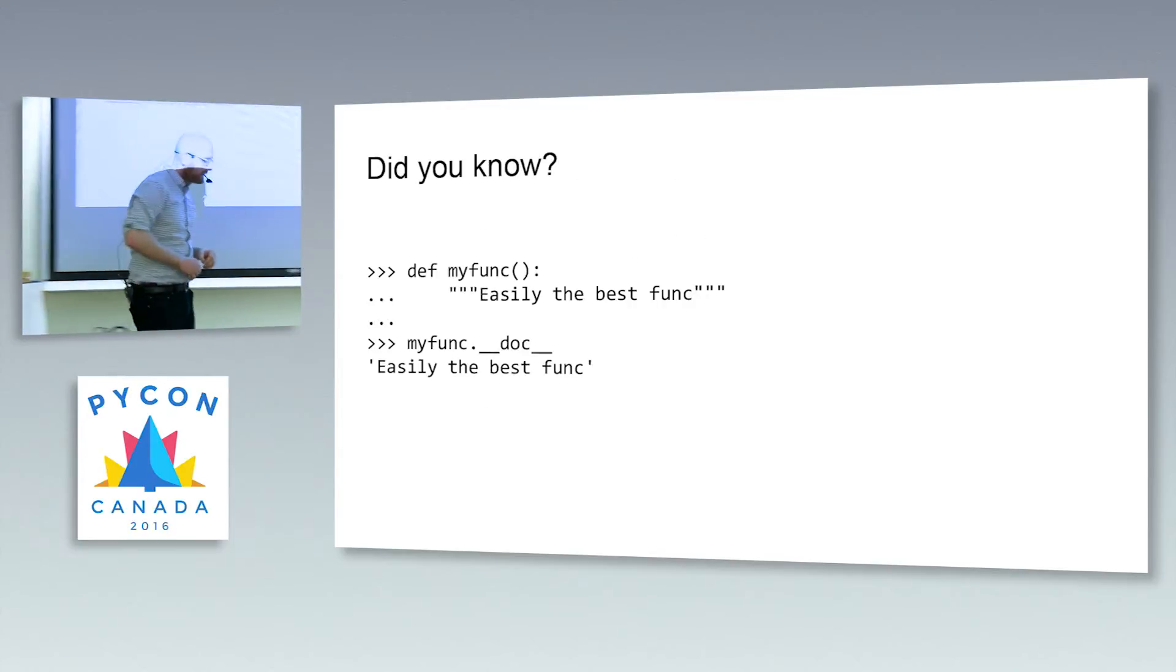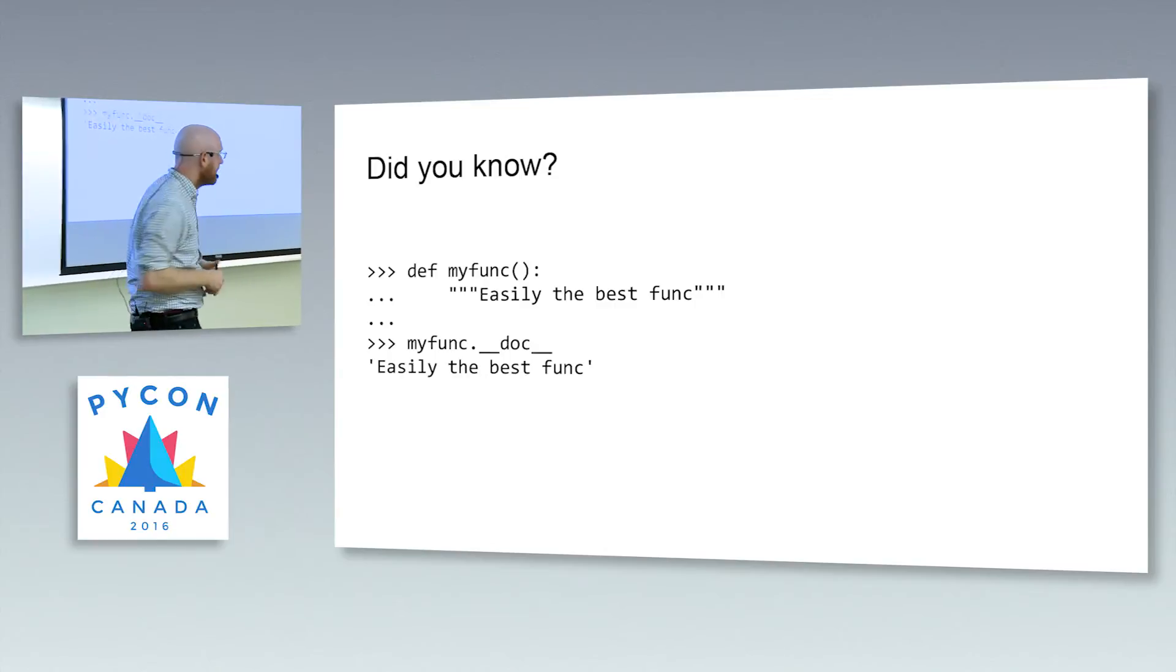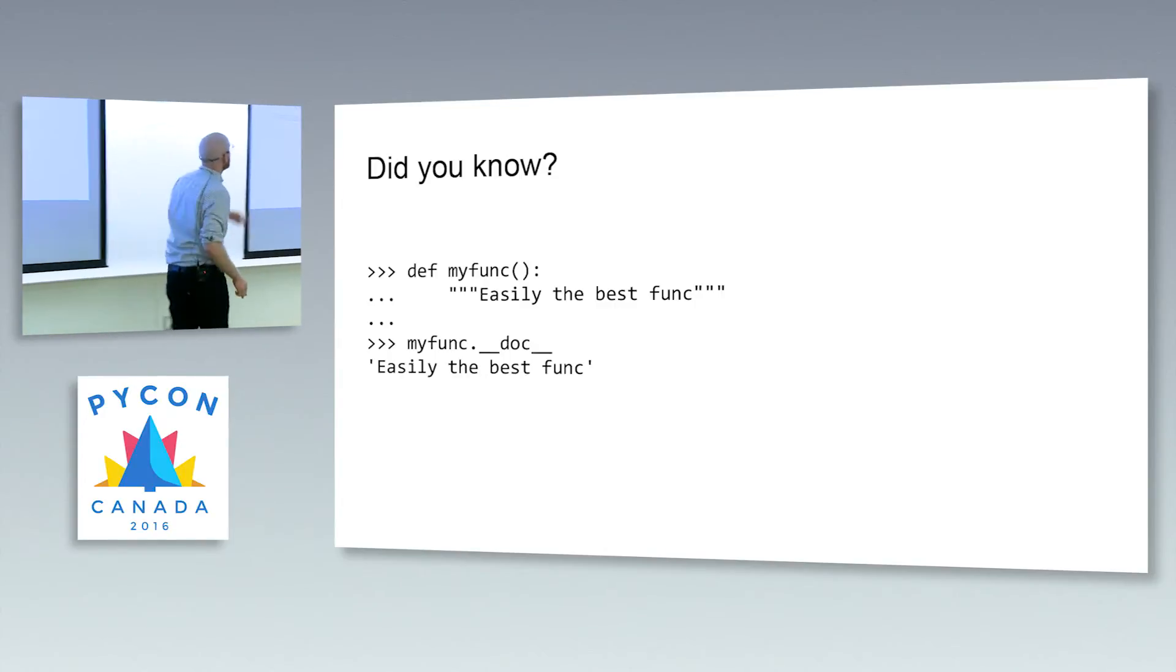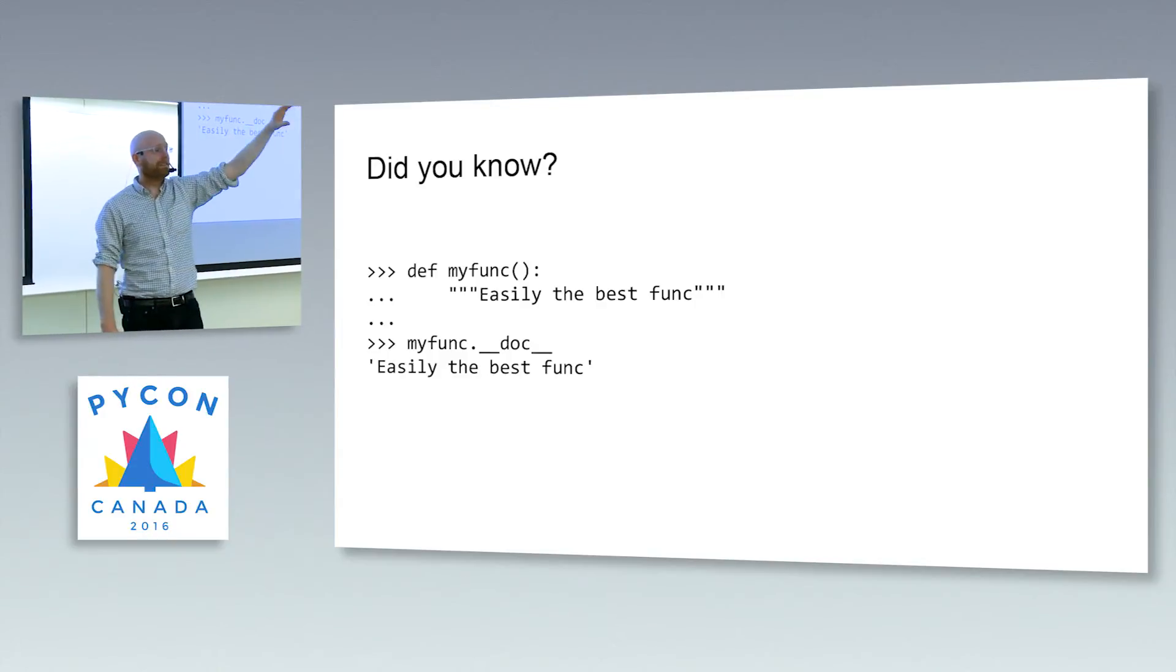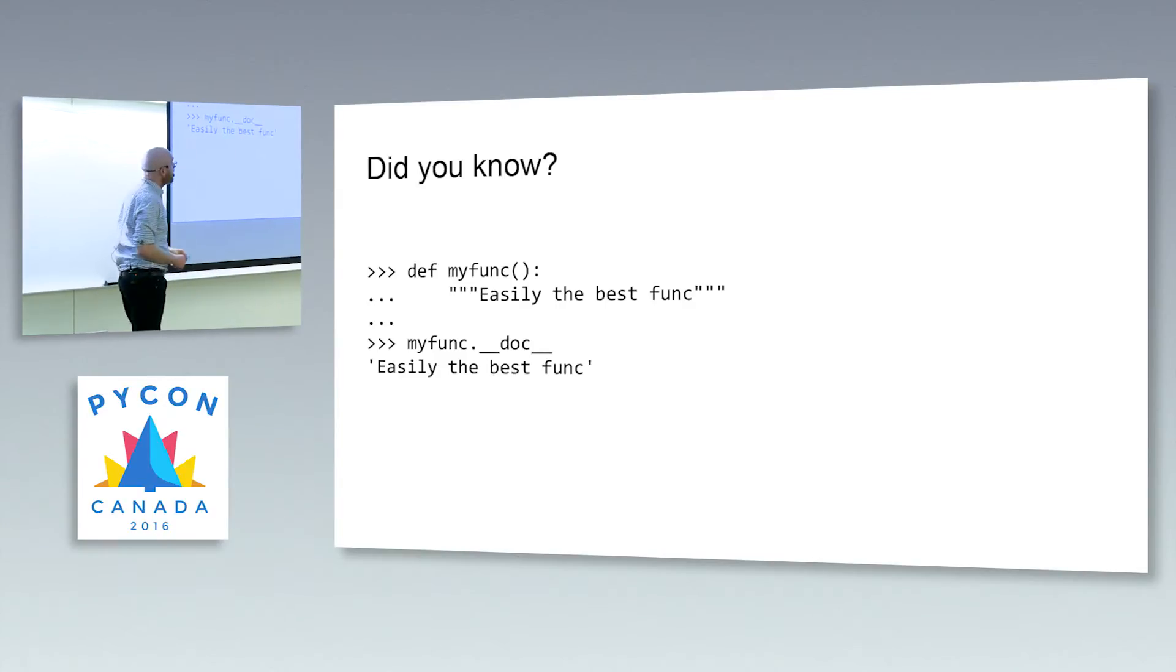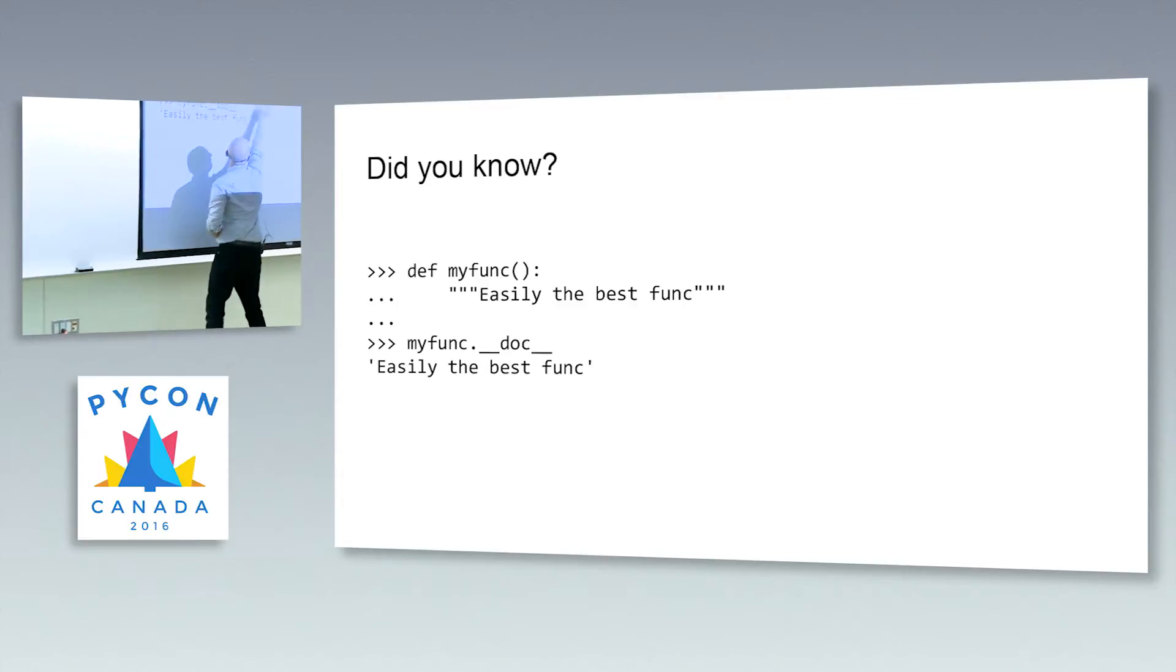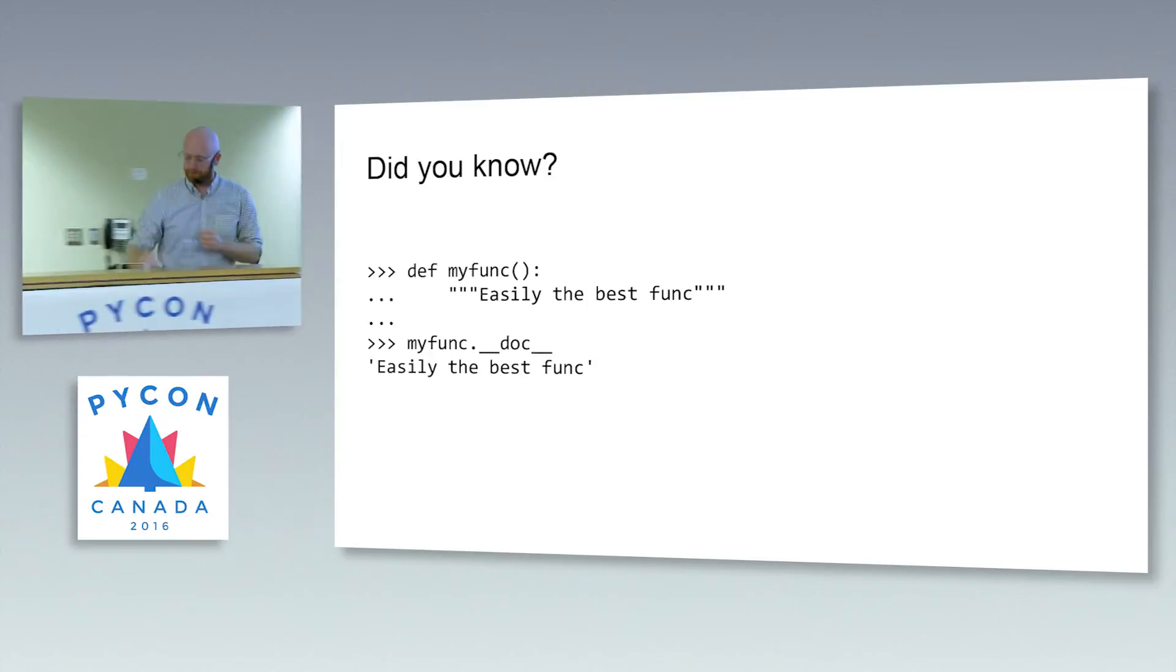Classes are not the only thing that have these dunder methods or instances of classes. Functions are objects, right, in Python. Everything's an object, pretty much, in Python. A function is just an instance of the type function, right, or the class function. And so functions come along with dunder methods. And you've probably already defined certain dunder methods or dunder attributes when you've added in these doc strings. To get at this doc string, tools like Sphinx or other code analysis tools will look at the dunder doc to get that doc string. That gets compiled and built into the function itself.